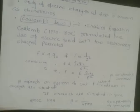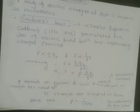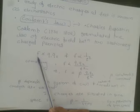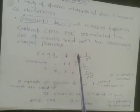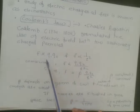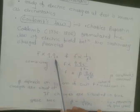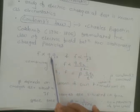Charles Augustin Coulomb, whose lifespan was from 1736 to 1806, formulated the law of electric force between two stationary charged particles. The law states that the force of attraction or repulsion between two point charges at rest is directly proportional to the product of the magnitude of the charges, and inversely proportional to the square of the distance between them, and acts along the line joining them.